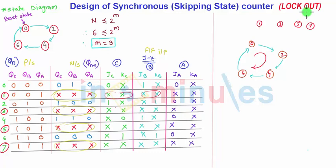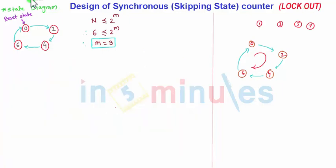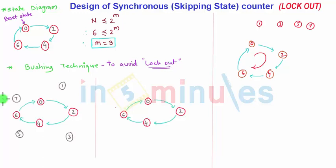To avoid this kind of condition, what we use is called as the bushing technique. So the technique used is bushing technique, particularly to avoid lockout conditions. What we do actually in the bushing condition or the bushing technique is the valid state diagram will be as it is.